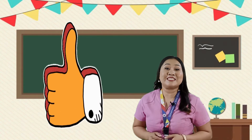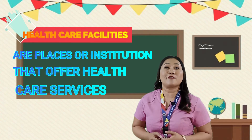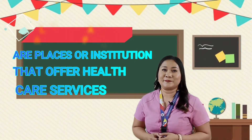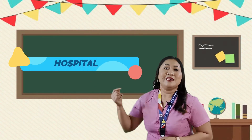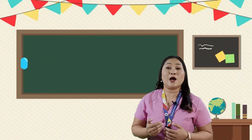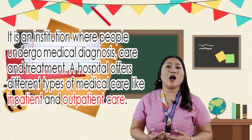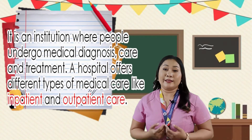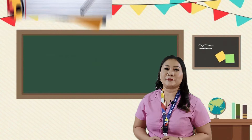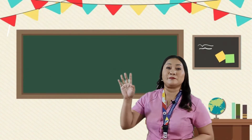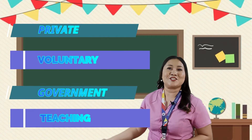Now, let us go to healthcare facilities. Healthcare facilities are places or institutions that offer healthcare services. The first healthcare facility is the hospital. It is an institution where people undergo medical diagnosis, care, and treatment. A hospital offers different types of medical care, like inpatient and outpatient care. There are four kinds of hospital: private, voluntary, government, and teaching.